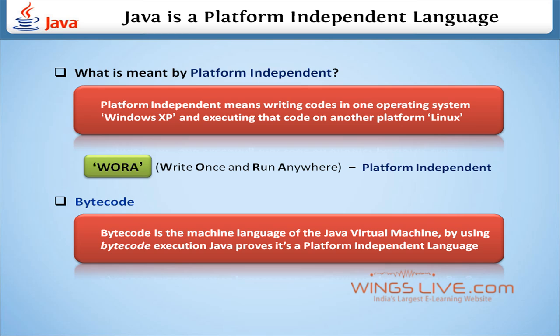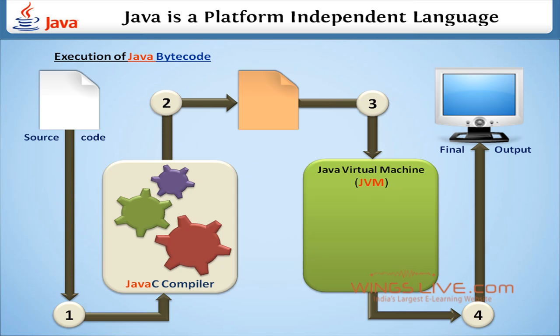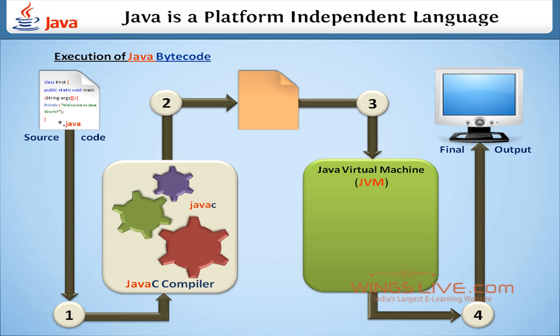Let us discuss the execution of Java bytecode. You are looking at the figure that explains the execution flow of a Java program. First, write your source code in a plain text file and save it with the .java extension. Using the javac compiler, the source code is compiled into .class files. A .class file contains the source code in the form of bytecode.